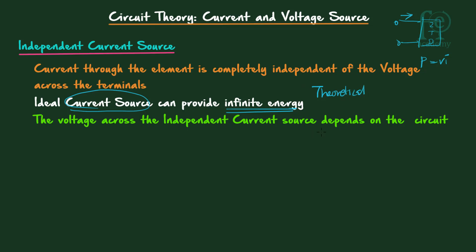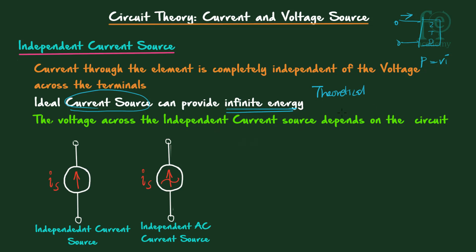The voltage across an independent current source depends on the circuit. The symbol for an independent current source uses a circle with an arrow flowing upwards — the small letter 'i' indicates current may be varying, and S represents source. For an independent AC current source, a sine wave is used with the arrow mark.